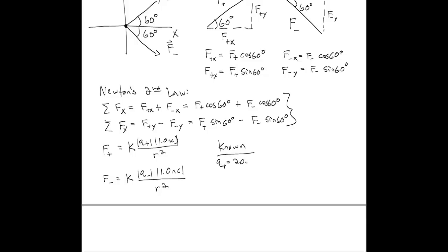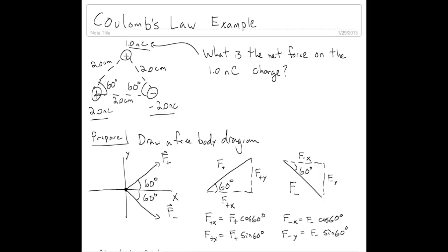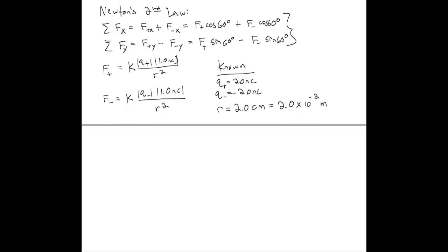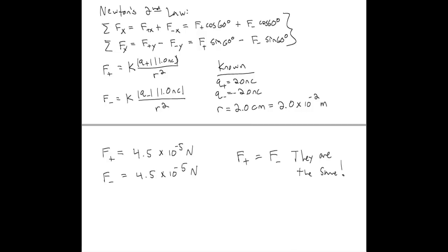R is the distance from the charge causing the force to the charge feeling the force — that's this leg of the triangle, 2 centimeters, or in SI units, 2.0 × 10⁻² meters. Using that, the magnitude of F+ works out to 4.5 × 10⁻⁵ newtons. F- is actually the same, since we put in the same numbers. So the magnitudes of F+ and F- are equal, which is going to lead to some very important cancellations and simplifications.